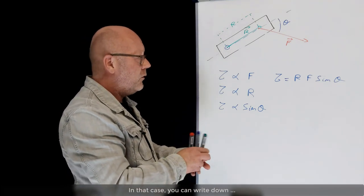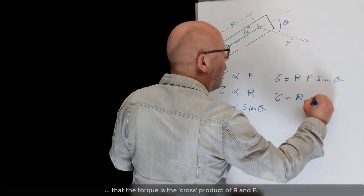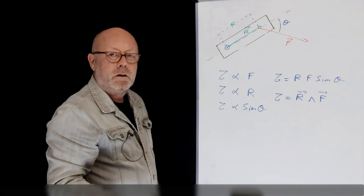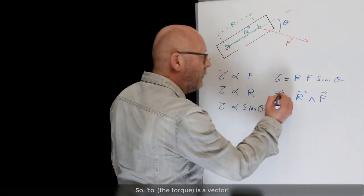In that case, you can write down that the torque is the cross product of R and F. When you have a cross product between vectors, you generate a vector. So torque is a vector.